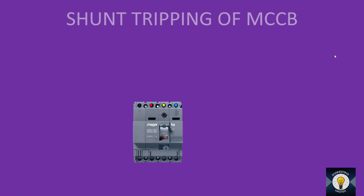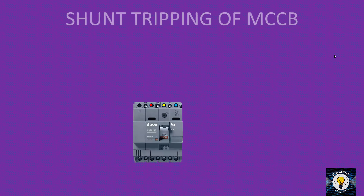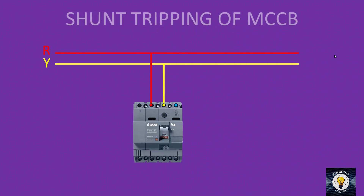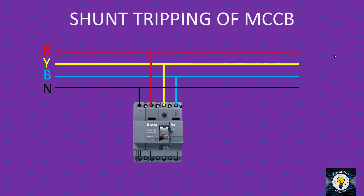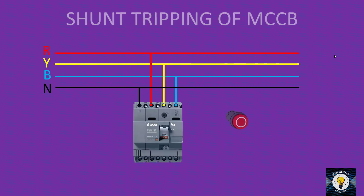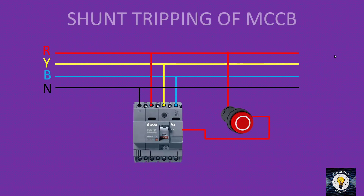Shunt tripping or remote tripping is possible in MCCB. To wire it: connect three phases R, Y, B and neutral N to the MCCB. Take an emergency push button switch, connect a phase to it, and that wire connects to the shunt terminal of the MCCB. Connect neutral as well. This is the basic wiring for shunt tripping.